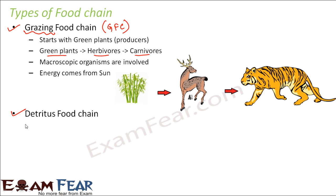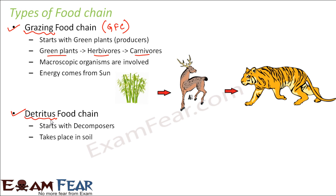The next type is the detritus food chain. Detritus is dead and decaying remains — dead plant and animal remains. This food chain involves decomposers, also termed saprotrophs. These decomposers secrete digestive enzymes, breaking down dead and decaying matter and waste materials, converting organic wastes into simple inorganic minerals. This entire food chain takes place in the soil.